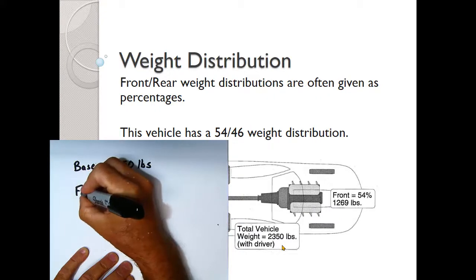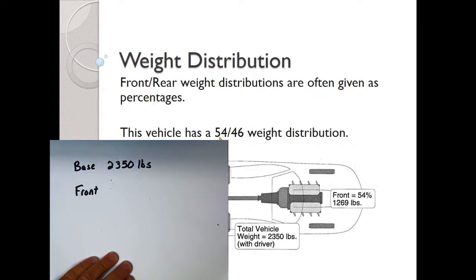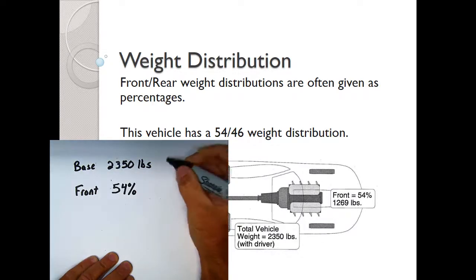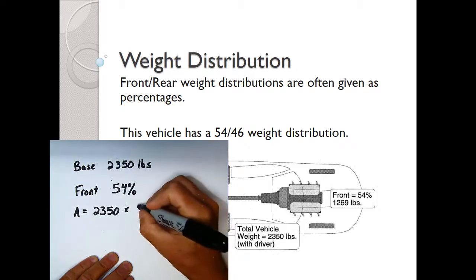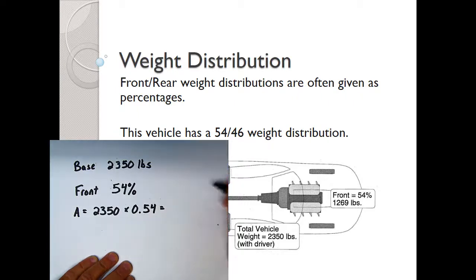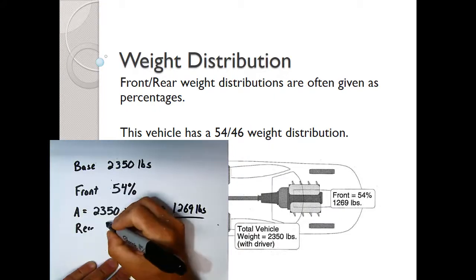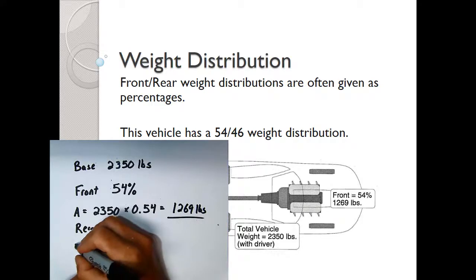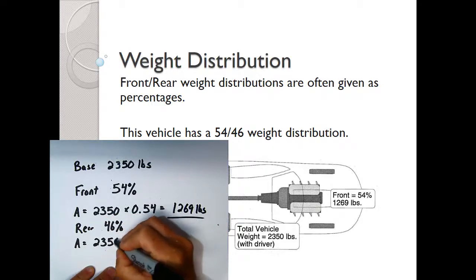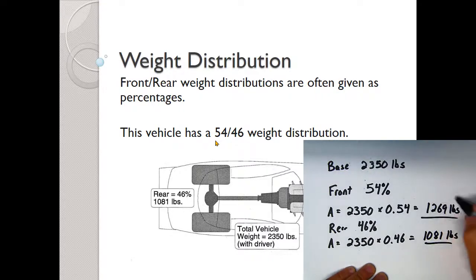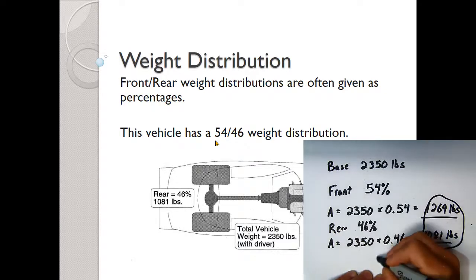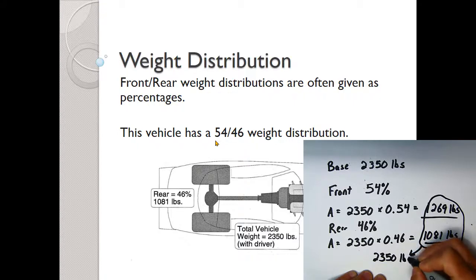With a base of 2350 pounds, the front holds 54%: 2350 × 0.54 = 1269 pounds, which matches the shown value. The rear holds the other 46%: 2350 × 0.46 = 1081 pounds. Adding 1269 + 1081 = 2350 pounds, which equals the total vehicle weight — confirming our calculations are correct.